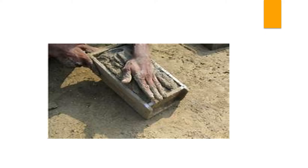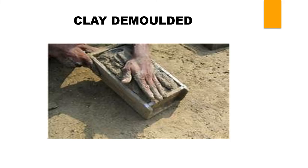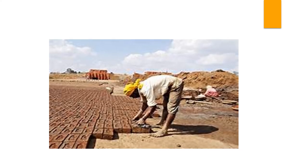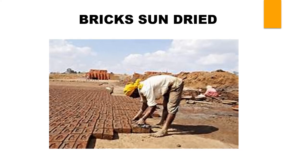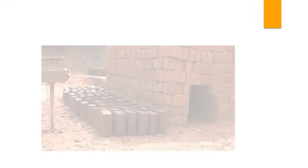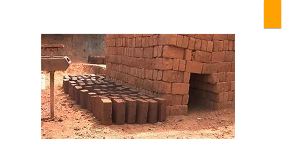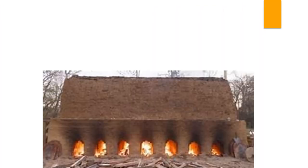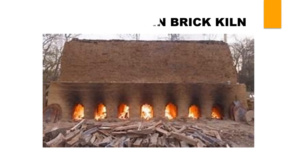Now the clay is removed from the mold. This step is called demolding. Now the bricks are dried under the sun. Some dried bricks are arranged in a brick kiln. Bricks are burned in the brick kiln.